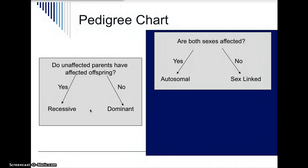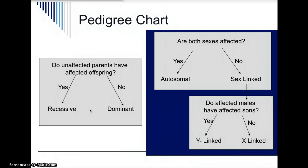If the trait is sex-linked, ask yourself another question: do affected males have affected sons? If yes, then the trait is on the Y-chromosome, or it is Y-linked. If no, the trait is on the X-chromosome, or it's X-linked. Males pass their Y-chromosome to their sons, and women pass their X-chromosome to their sons — so sons do not get an X-chromosome from their fathers. Pause this video and write down this chart so you'll have it when you analyze pedigrees.